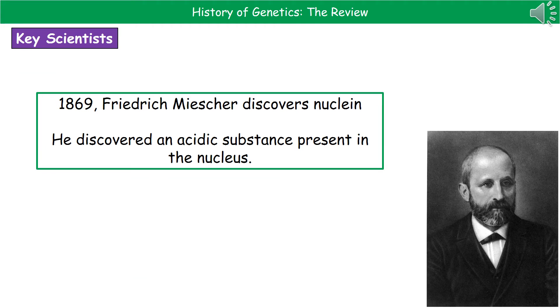The second key scientist we need to know about is in 1869, where we meet Frederick Miescher. He actually discovered that there's an acidic substance present in the nucleus, which we called nuclein.